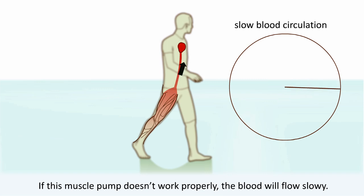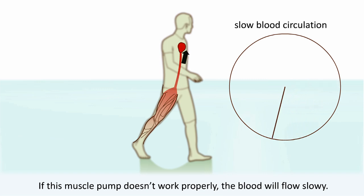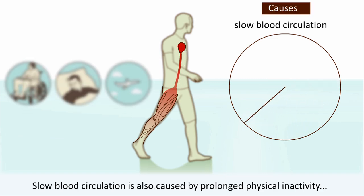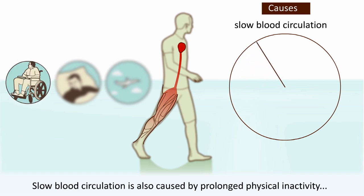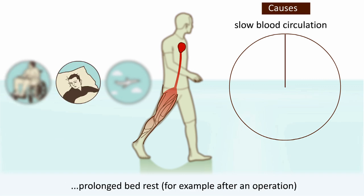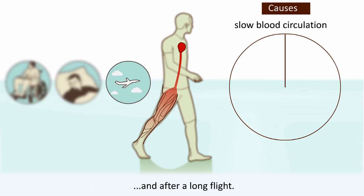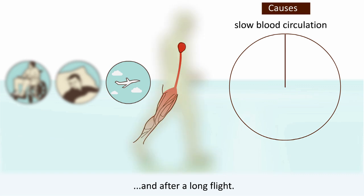If this muscle pump doesn't work properly, the blood will flow slowly. Slow blood circulation is also caused by prolonged physical inactivity — prolonged bed rest, for example after an operation, and after a long flight.